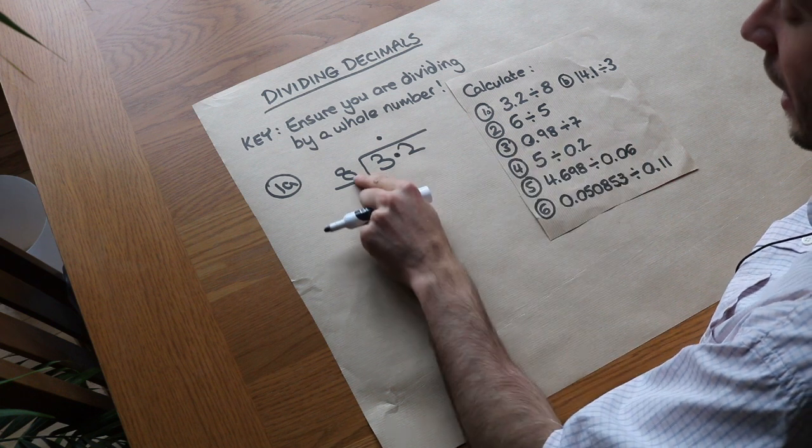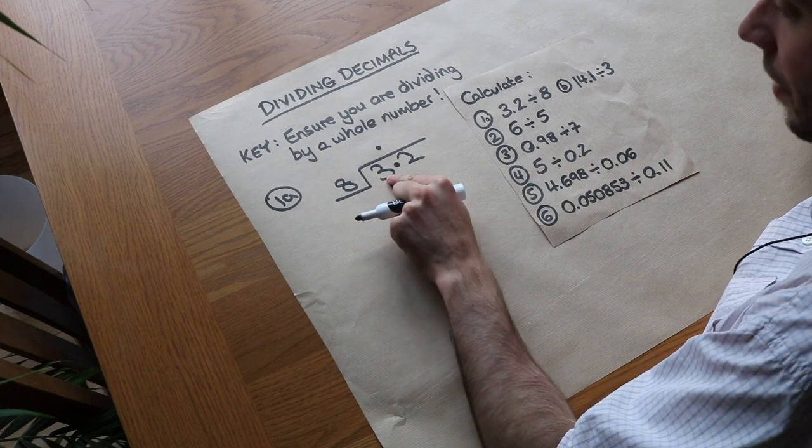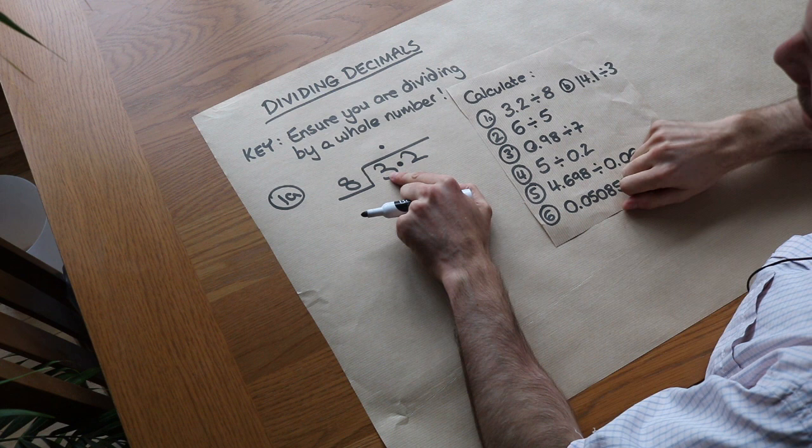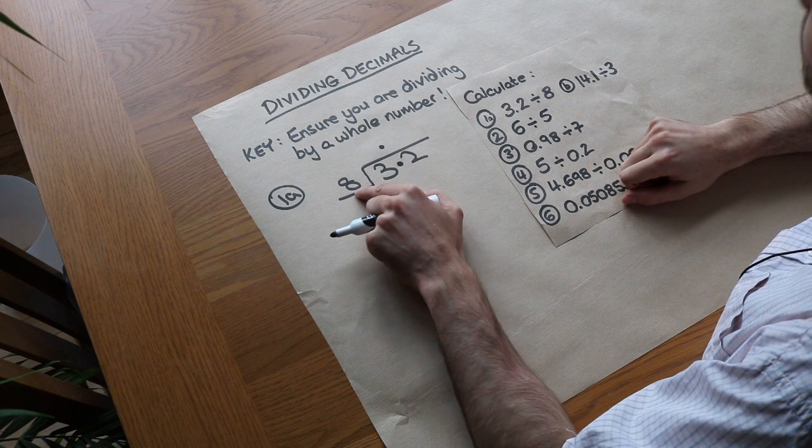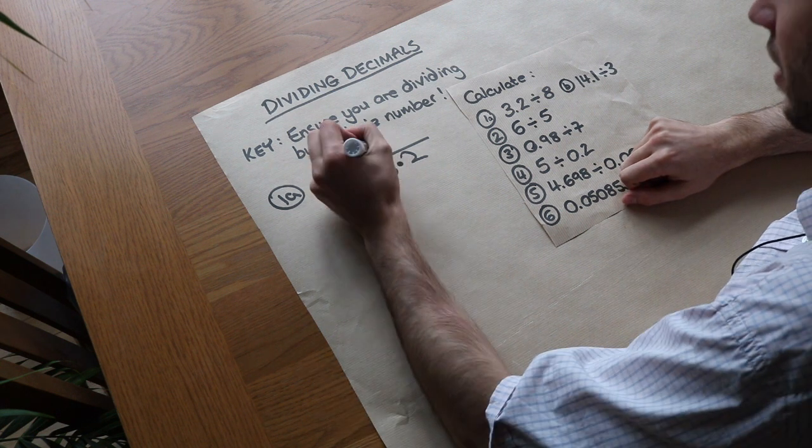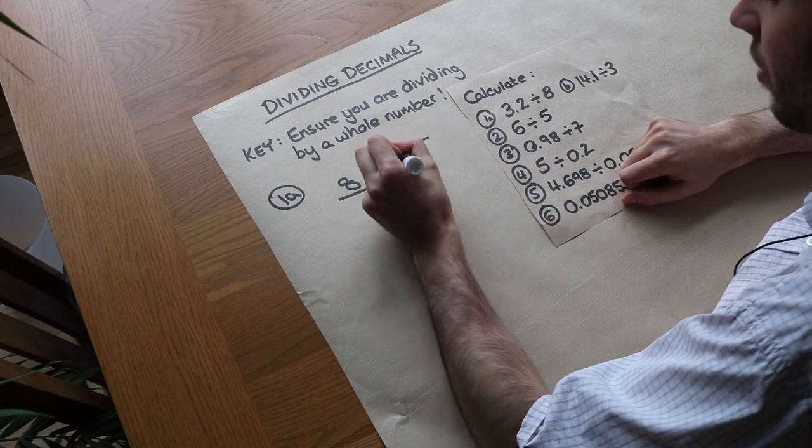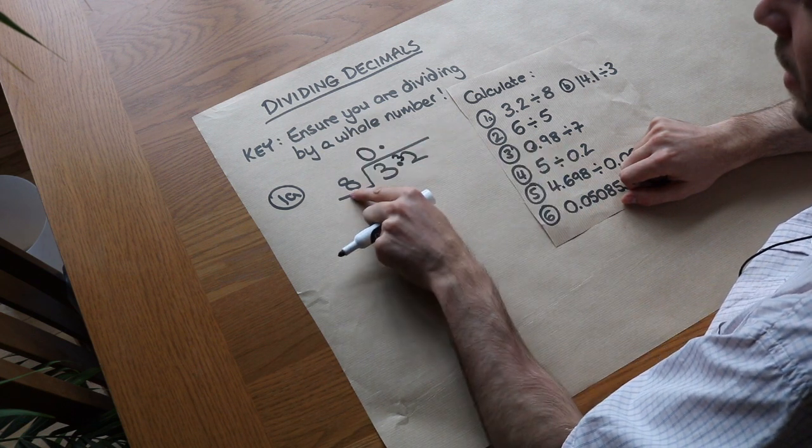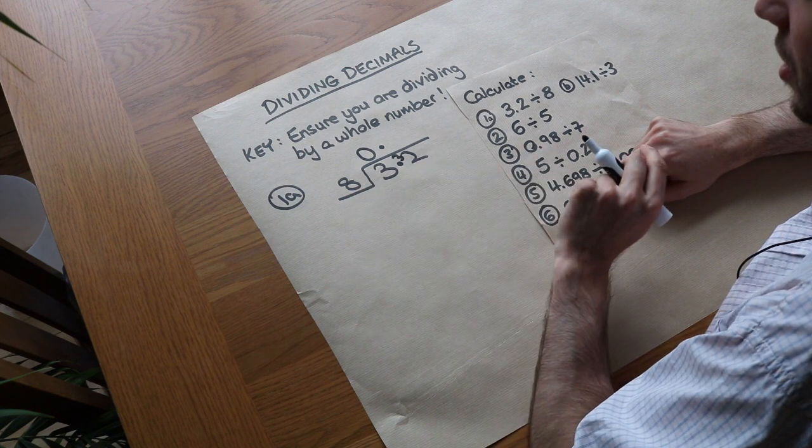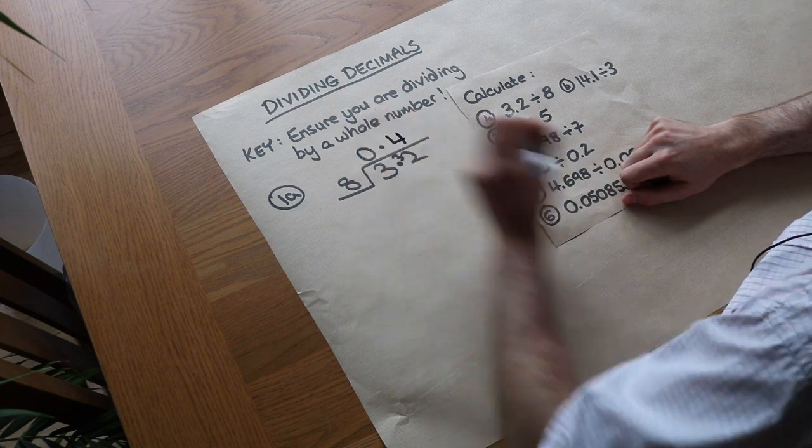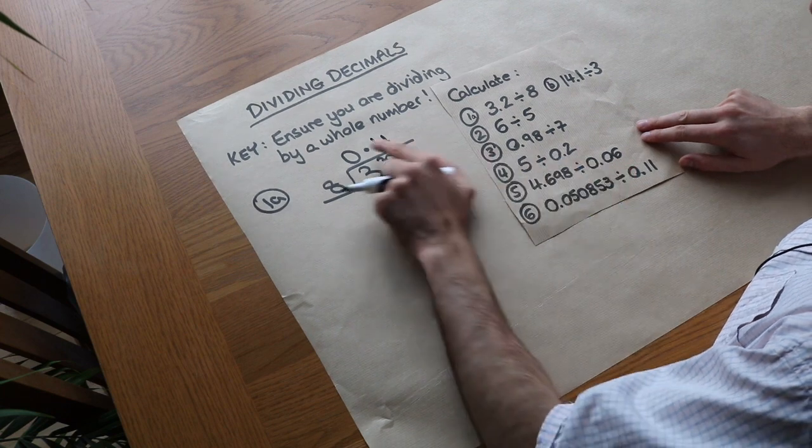And then we do exactly the same thing as before. How many times does 8 go into 3? Well it doesn't. If you have 3 sweets and you share it between 8 people, then no one gets a sweet, so it goes in 0 times. But you still have the 3 sweets left, so you can put the remainder of 3 on here. And now it's how many times does 8 go into 32? Well it goes in 4 whole times. And there we go, that is the answer. We get 0.4.